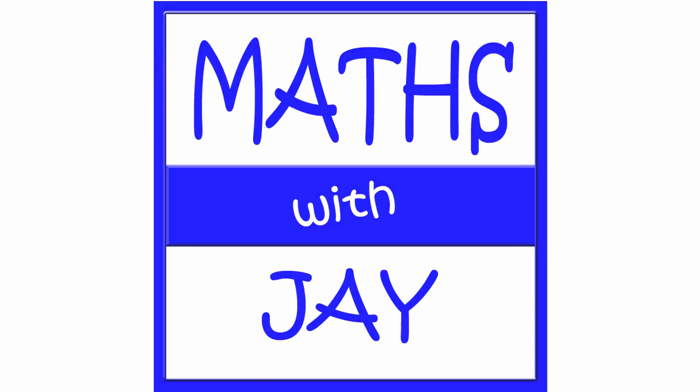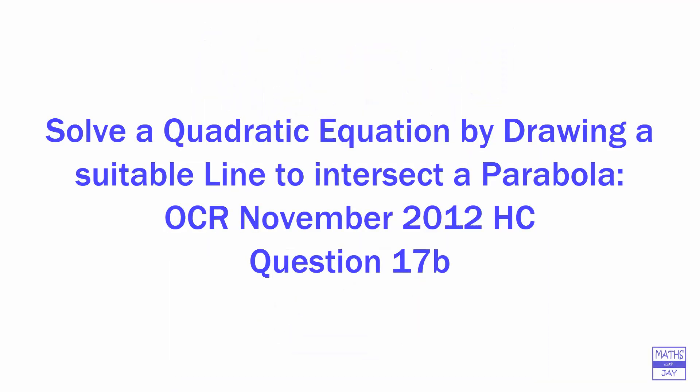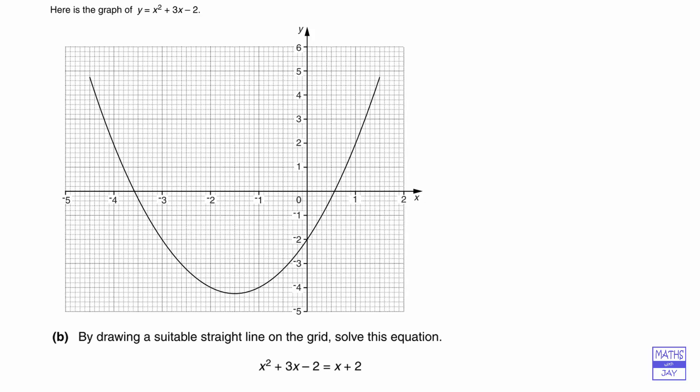Hello, welcome to Maths with Jay. So the graph that we've already got here is y equals x squared plus 3x minus 2, and we can see that's the left hand side of the equation that we're trying to solve.